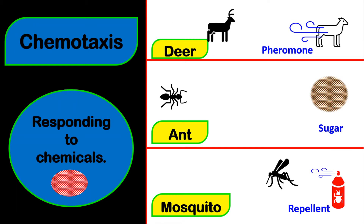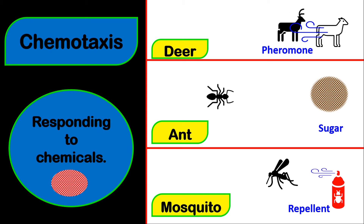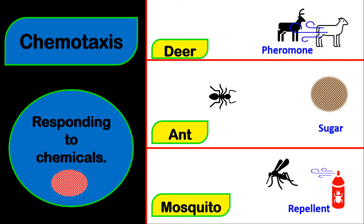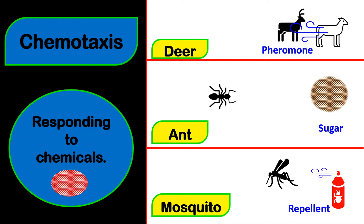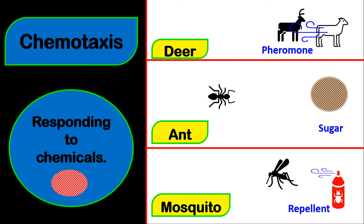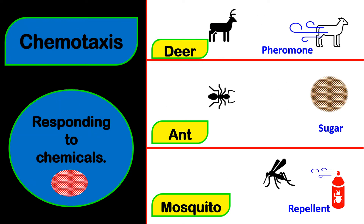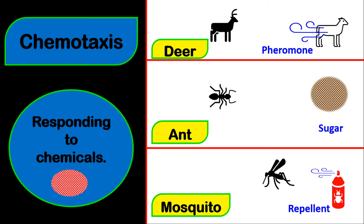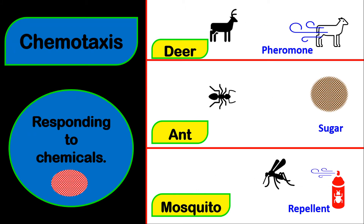In the case of the ant, ants will move towards sugary substances, so they respond to the chemical for sweetness. For these two examples, they are positive responses in terms of chemicals, so we could call them positive chemotaxis responses. In the case of mosquitoes, they will move away from repellent, responding negatively to the chemical in the repellent — a negative chemotaxis response.